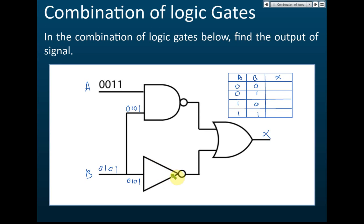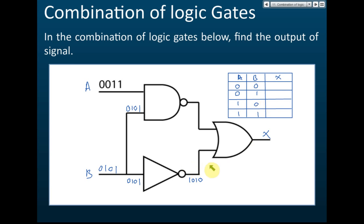Let's start with the easy one first — the NOT gate. The output of the NOT gate for input zero, one, zero, one becomes one, zero, one, zero. That's correct, because the NOT gate changes one to zero and zero to one. The advised method is to write the output values on top of or in front of each logic gate rather than relying solely on the truth table.